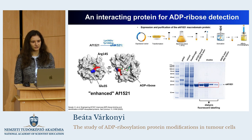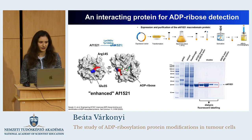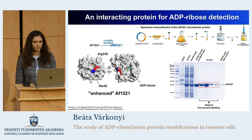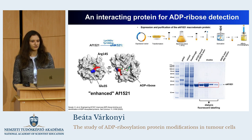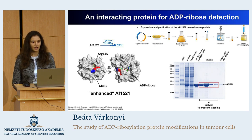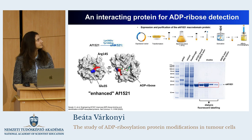The protein was expressed in E. coli bacteria, and then it was labeled with fluorescent dyes. In all the experiments presented today, you will see ADP ribose in red and the nuclei of the cells labeled with blue.